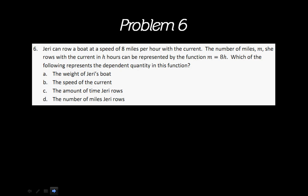So the first one, problem 6, says Jerry can row a boat at the speed of 8 miles per hour with the current. The number of miles m she rows with the current in h hours can be represented by the function m equals 8h. Which of the following represents the dependent quantity in this function? So you need to focus on this equation here. It says m equals 8h.